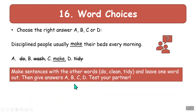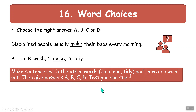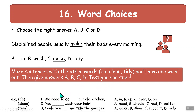In class we will make sentences with other words — do, clean, tidy. Make a sentence and leave one word out, then give answers A, B, C, or D. You make up your answers and you can test your partner or somebody. This is good practice.